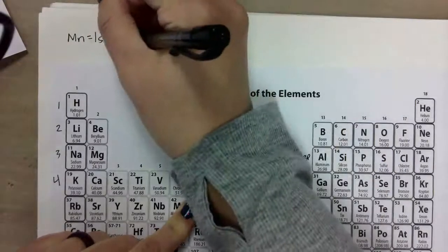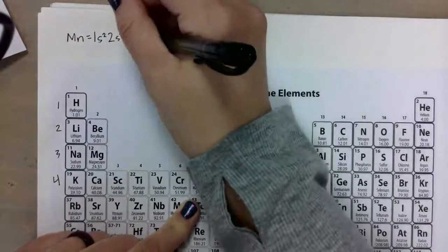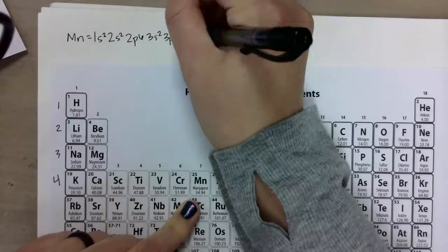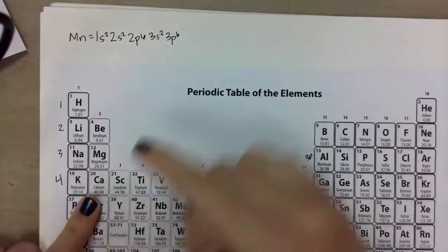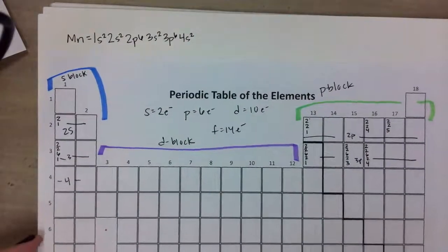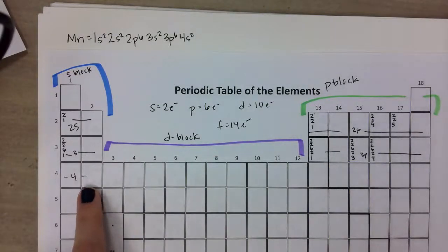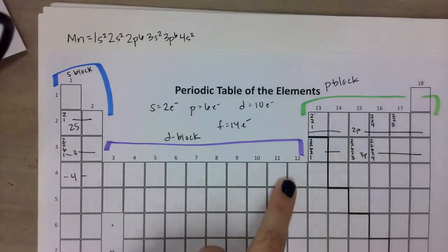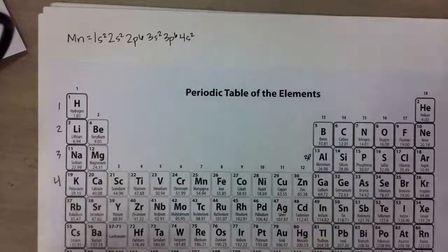Our electron configuration is going to be 1s2 2s2 — hopefully you're kind of getting the hang of this so I'm going to get going a little faster — 2p6 3s2 3p6. That's me going through this shell here, and then the next one is 4s2. If we refer back to our periodic table where we labeled things with the d block, the next thing that comes would be this d block shell — and you're correct — but it is not called the 4d shell, it's actually called the 3d shell.